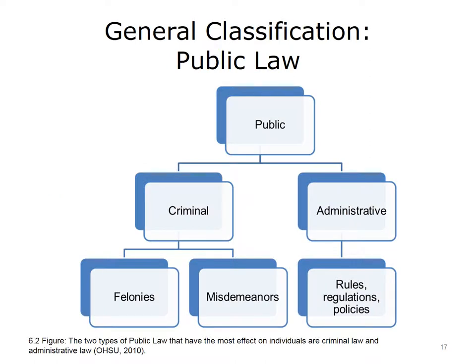The two types of public law that have the most effect on individuals are criminal law and administrative law. The most serious kinds of crimes, such as murder and kidnapping, are called felonies. Less serious crimes, such as disturbing the peace and minor traffic violations, are known as misdemeanors. Both of these fall under criminal law. Administrative law consists of the many rules, regulations, and policies written by government agencies.